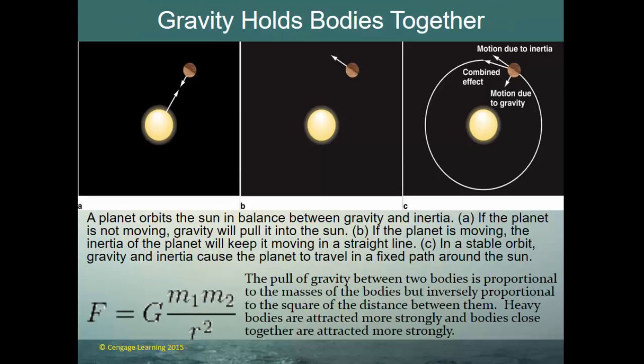Gravity holds bodies together. A planet orbits the sun in balance between gravity and inertia. If the planet is not moving, gravity will pull it into the sun. If the planet is moving, inertia will keep it moving in a straight line. In a stable orbit, gravity and inertia are in balance and cause a planet to travel in a fixed path around the sun. Bodies tend to move in a straight line unless another force acts upon them — gravity is that force, causing planetary motion in an ellipse around the sun.